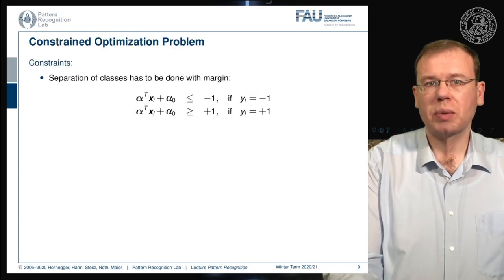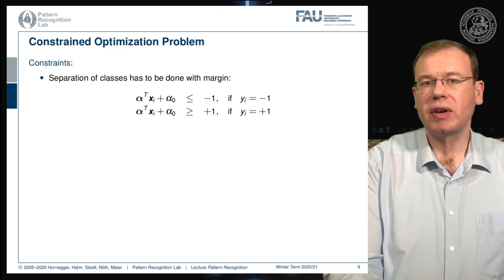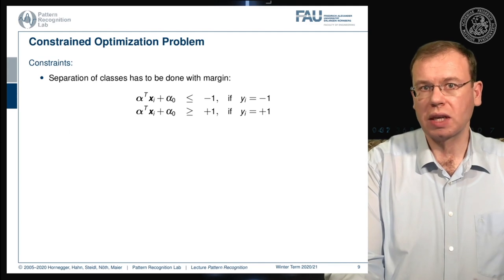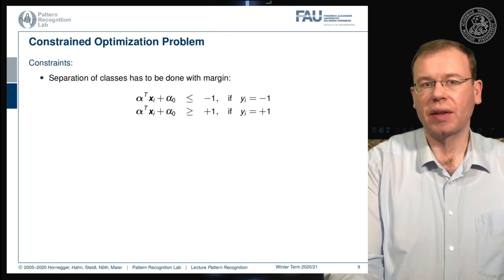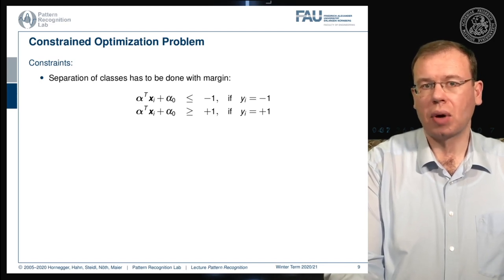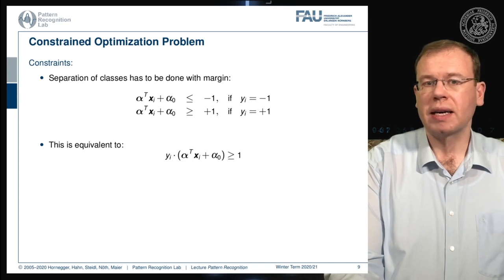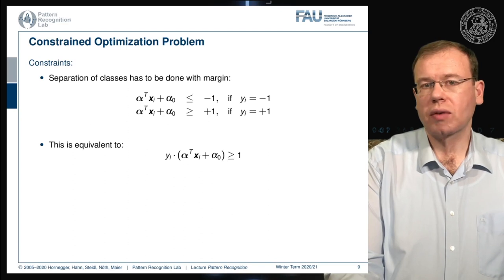The separation of the two classes must be done with margin. Computing the distance to the hyperplane, alpha transpose x_i plus alpha zero must be below minus one for the negative class — keeping the margin free, with a space of one on either side of the decision boundary. For the positive class, alpha transpose x_i plus alpha zero must be greater than one. We can write this elegantly as: y_i times (alpha transpose x_i plus alpha zero) greater than or equal to one, combining both inequalities by multiplying with the factor y_i.